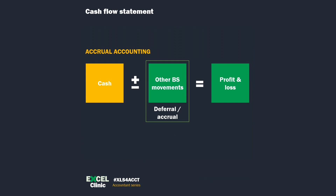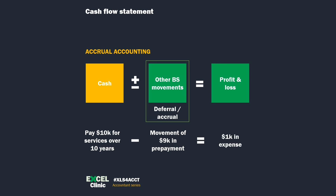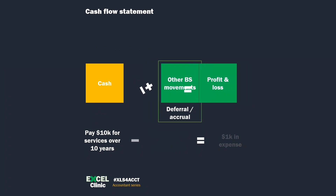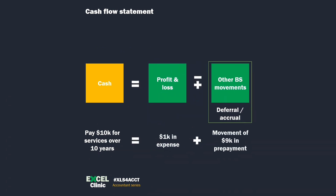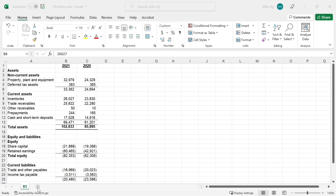If you are an accountant, you probably know about accrual accounting very well. Imagine you paid $10,000 for services over 10 years. You would recognize a prepayment of $9,000 for the remaining nine years and the expense for the year should be $1,000. In other words: cash plus or minus other balance sheet movement equals profit. If we rearrange the formula, the cash flow will be profit and loss adjusted for other balance sheet movements. I'm going to show you the indirect method for operating cash flows, but the matrix can also be used for the direct method with a small tweak. Okay, Excel time.